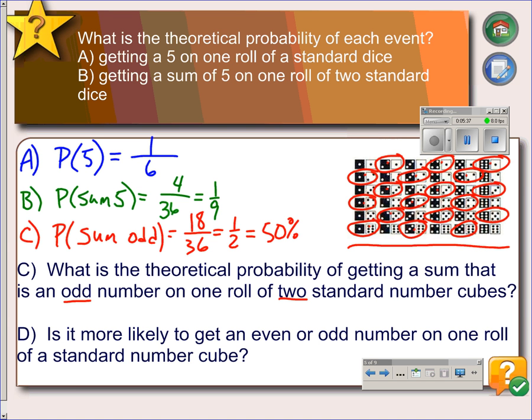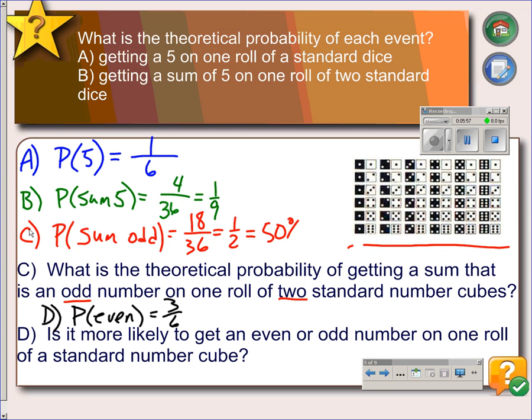Part D: is it more likely to get an even or an odd number on one roll of a standard number cube? So for part D, the probability of getting an even would be 3 out of 6. Because when you look at just one set of dice, right here,